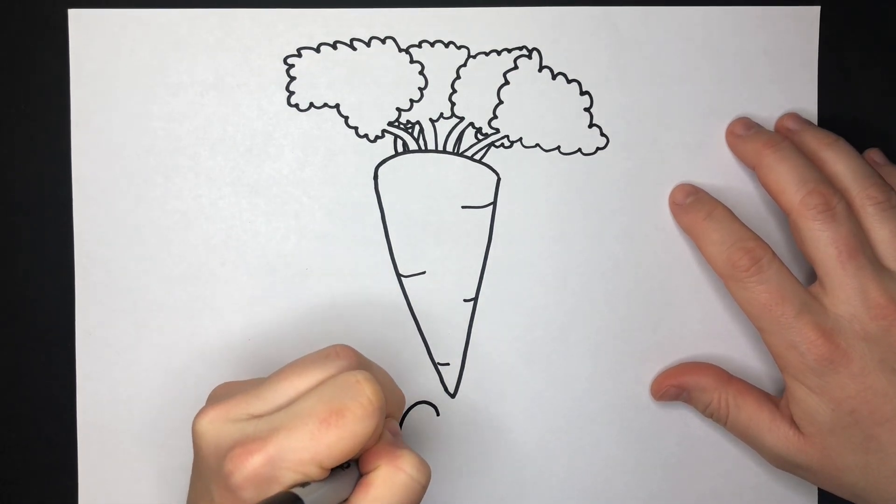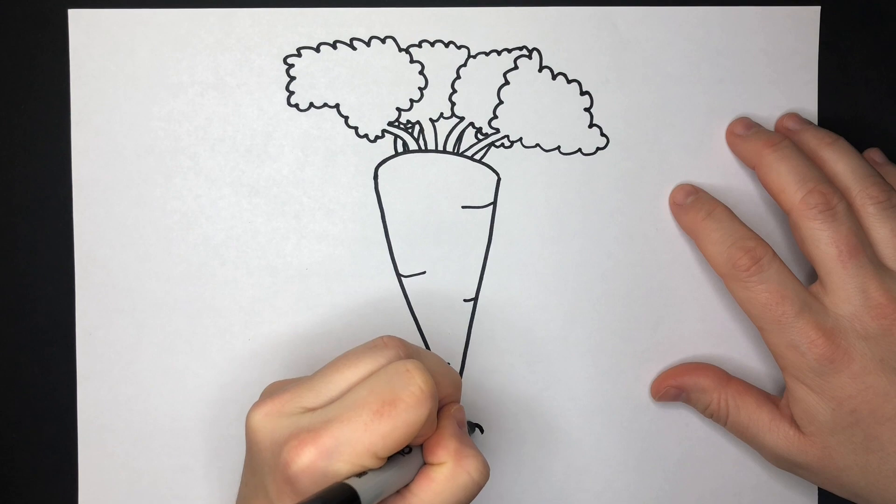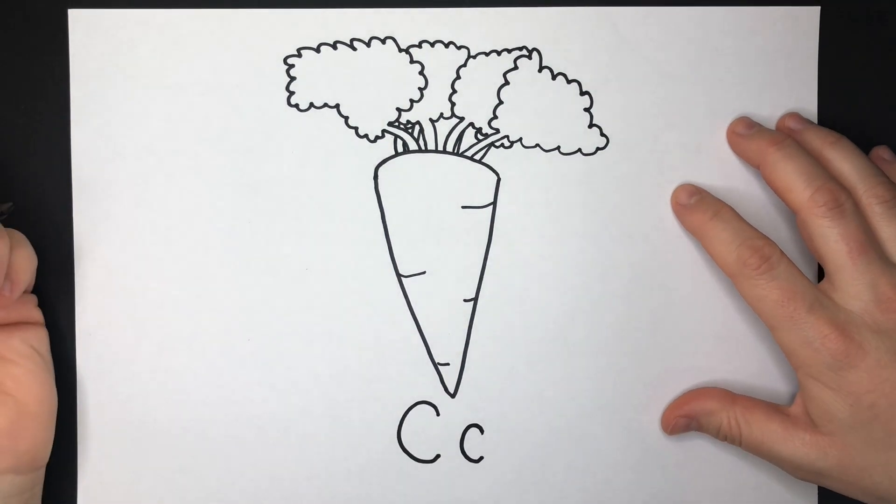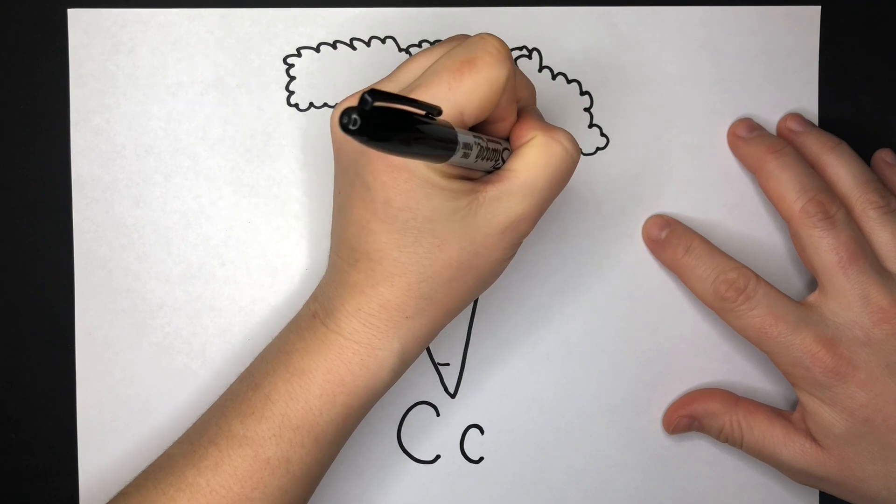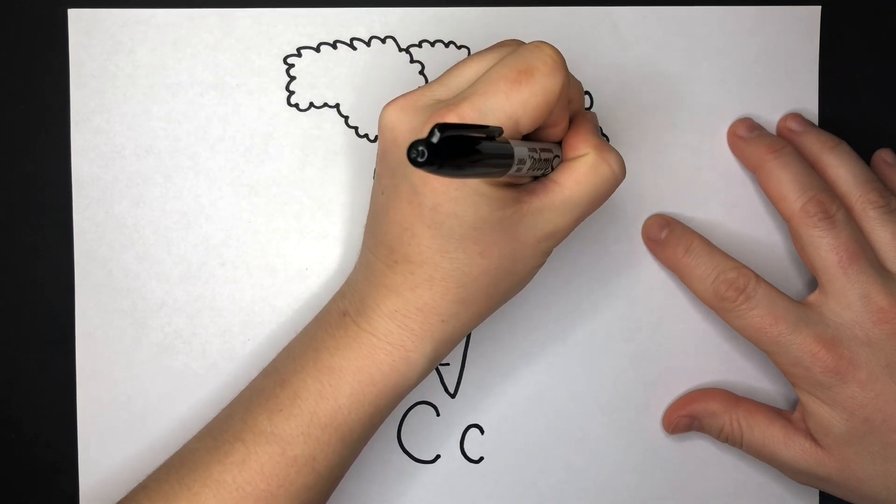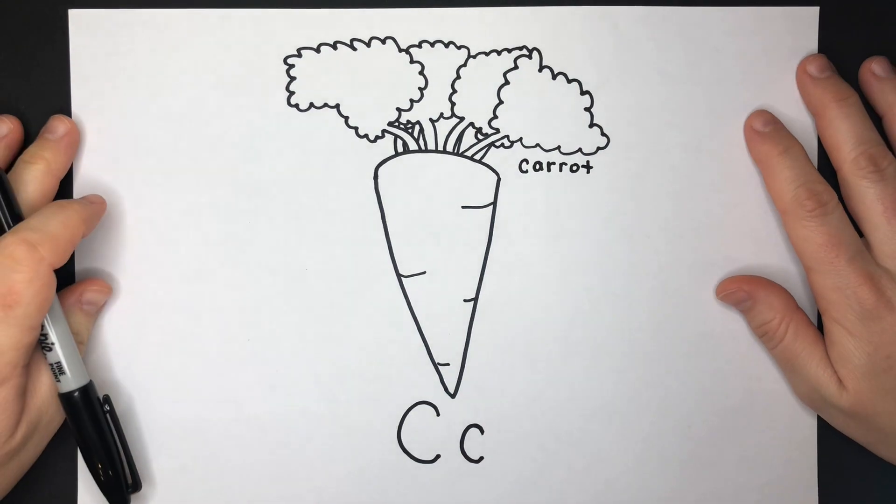And then lastly I'm going to put the big C and the little C on the bottom, and then I'm going to write carrot, C-A-R-R-O-T. And there you have it, C carrot C.